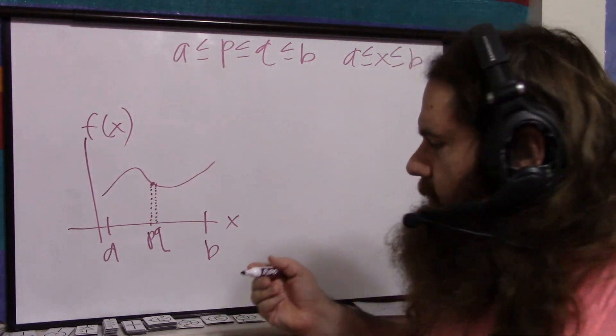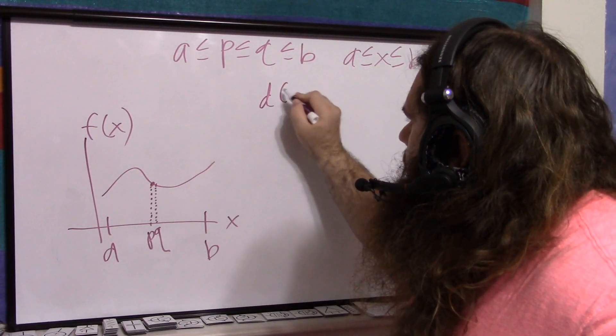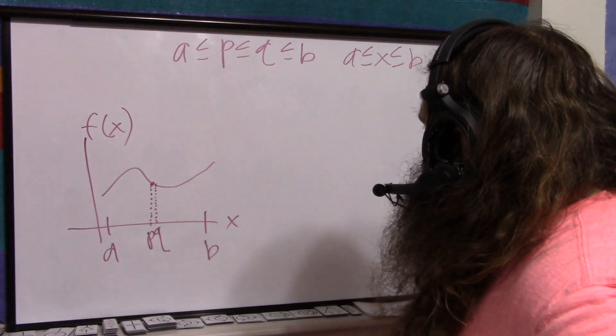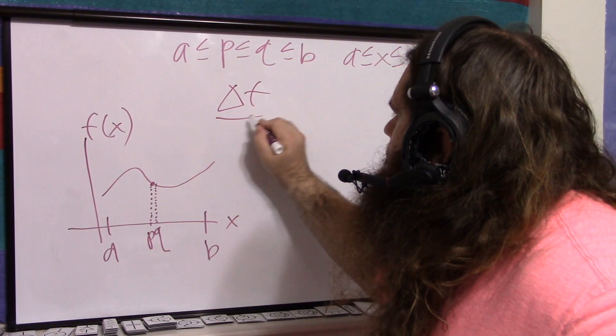So what is the slope? It's, if you recall, you might say df/dx, or, if it's a little more clear, delta f over delta x.